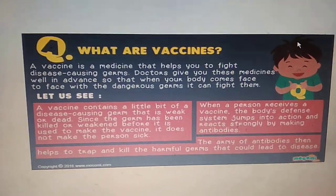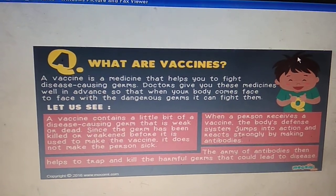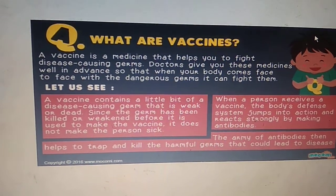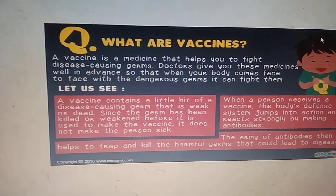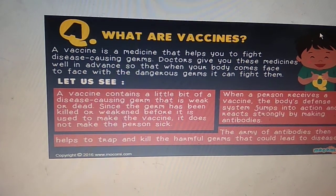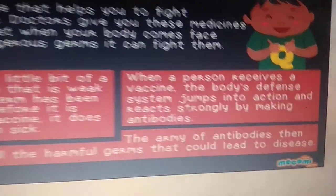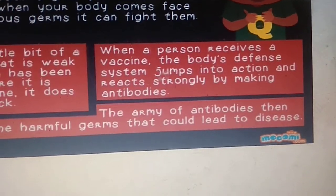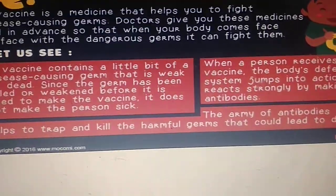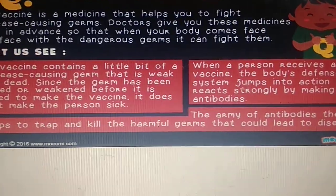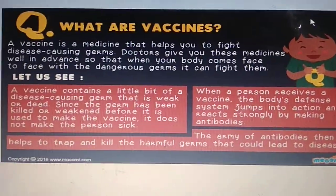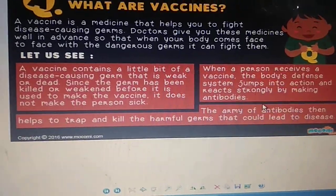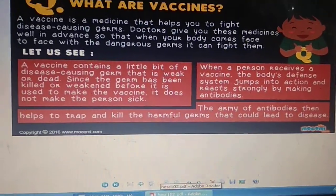A vaccine is a medicine that helps you fight disease-causing germs. Doctors give it in advance so that when your body comes face to face with dangerous germs, it can fight them. A vaccine contains a little bit of the disease-causing germ that is weak or dead, so it does not make the person sick. When the person receives the vaccine, the body's defense system activates and antibodies — the soldiers of your body — are made. When harmful germs enter later, they cannot survive because antibodies are already present.